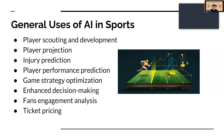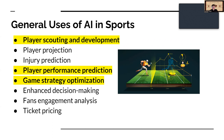The general uses of AI in sports include player scouting and development, player projection, injury prediction, player performance prediction, game strategy optimization, enhanced decision making, fan engagement analysis, and ticket pricing. The topics we're going to cover today specifically in basketball are player scouting and development with AI, how player performance prediction can be utilized, and how game strategy optimization goes into effect.